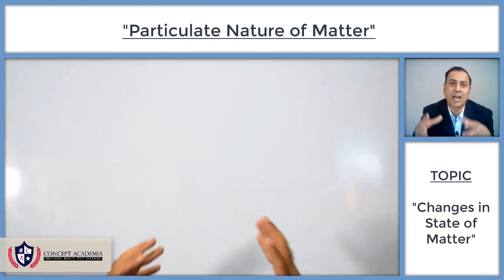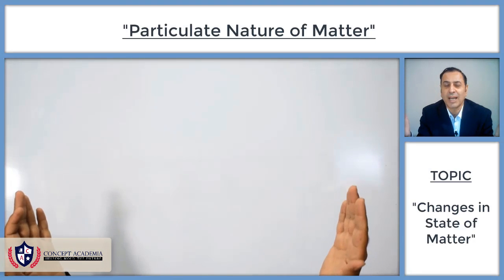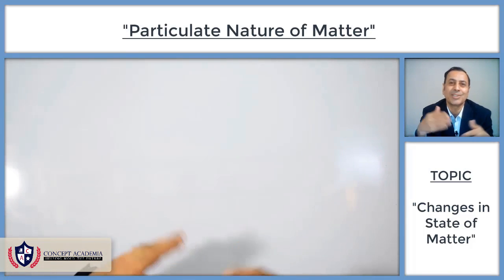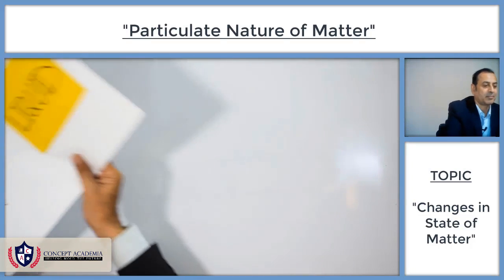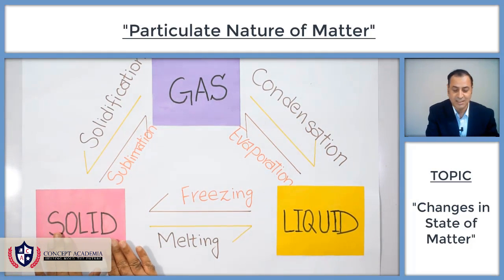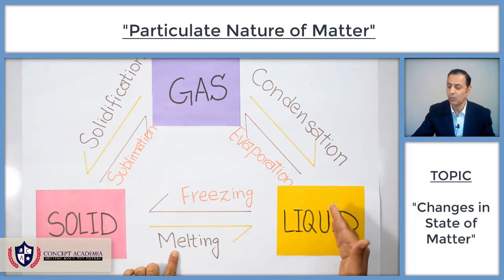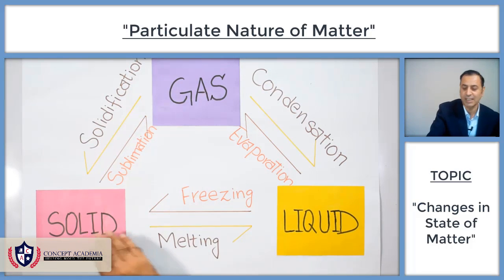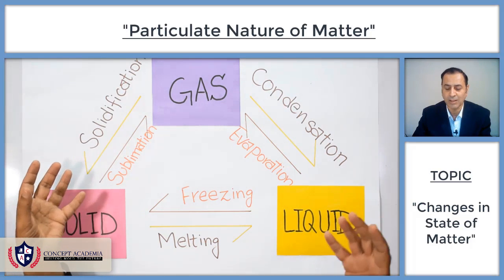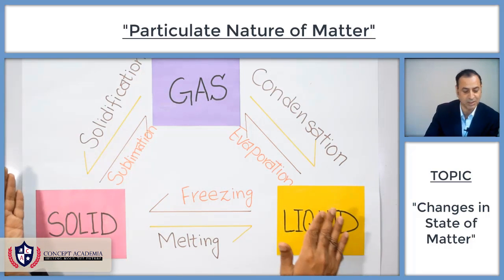All these changes can be summarized on one page, which gives us simplicity and helps us understand all changes in state of matter. Solid on heating converts into liquid — that is the melting point. The reverse, when we cool down liquid, it converts into solid — that is the freezing point. So you can see very clearly that all these changes can be summarized.